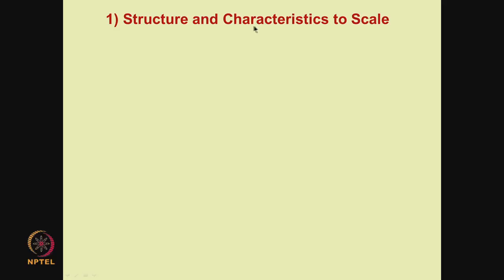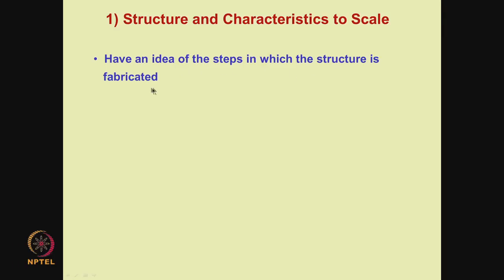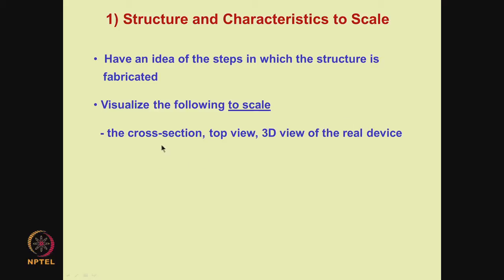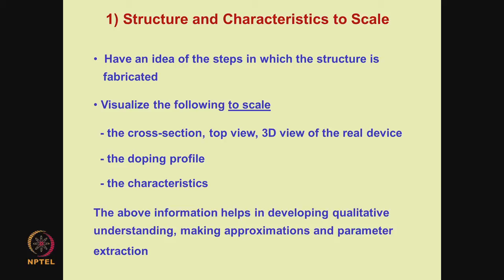Let me put down the device modeling procedure we discussed a couple of modules ago. The first step to modeling any device — in the present instance a bulk MOSFET — is to look at the structure and characteristics of the device to scale. We should have an idea of the steps in which the structure is fabricated and visualize to scale the cross-section, top view and 3D view of the real device, the doping profile and the characteristics. This information helps in developing qualitative understanding, making approximations and parameter extraction.